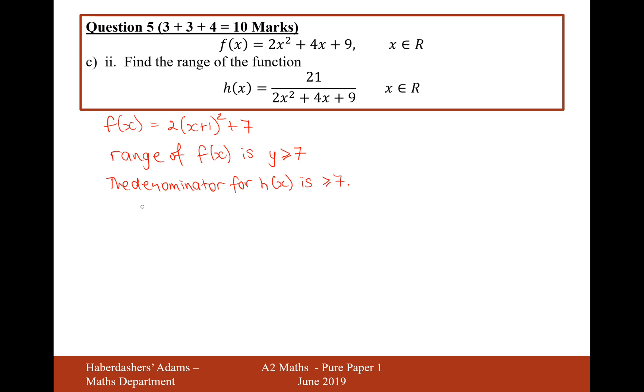So what we now know is that h of x is going to be 21 over something bigger or equal to 7. Now when it's 7 exactly, it's going to be 21 divided by 7 is 3.